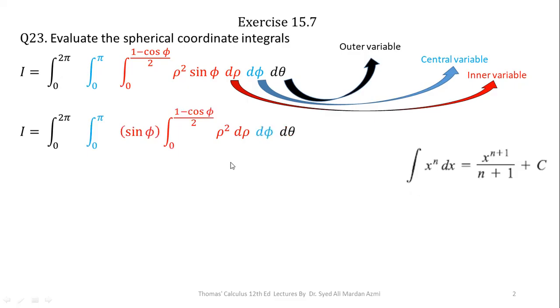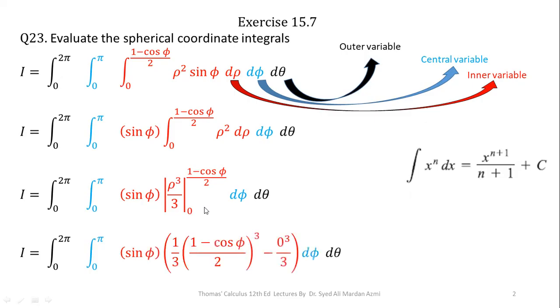So integration of ρ² is ρ³/3. Sin φ remains as it is, integration of ρ² is ρ³/3 for the given limits. In the next step, applying the limits upper limit minus lower limit.